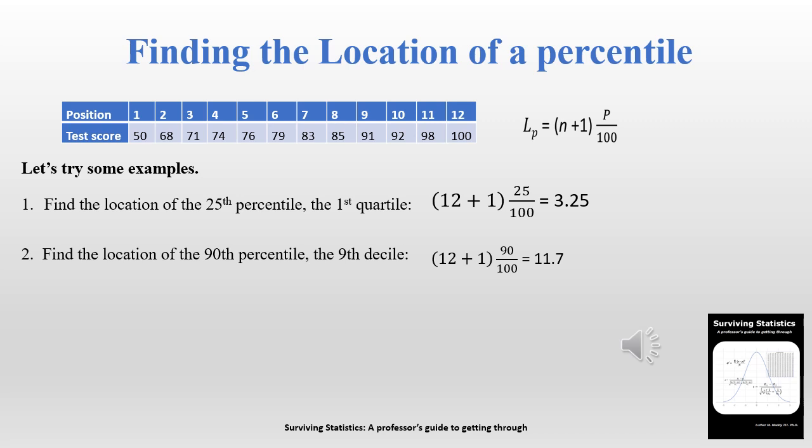We have 12 observations in a data set and the first question we're going to answer is: find the location of the 25th percentile, or the first quartile. So we have 12 + 1 times 25 divided by 100, and we end up with a location of 3.25. For the 90th percentile: 12 + 1 times 90 divided by 100 gives us 11.7. The location of the 25th percentile is position 3.25 — we'll talk about how to find that value in the next slide.